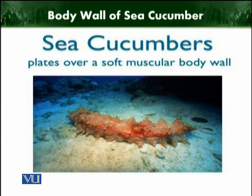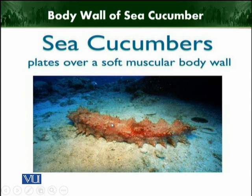This is the sea cucumber. These are the different kinds of plates over the muscular body wall. It is a cucumber-shaped structure having no spines, but there are plates present over the epidermis. After the epidermis comes the dermis, and then the muscular layer. So the body wall of sea cucumber comprises three layers: epidermis, dermis, and muscular layer.